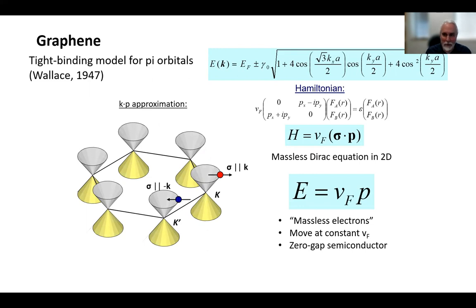And you can think of graphene's electrons as massless. They move at constant velocity independent of their energy. Or you can think of graphene as a zero gap semiconductor where the band gap closes to zero.